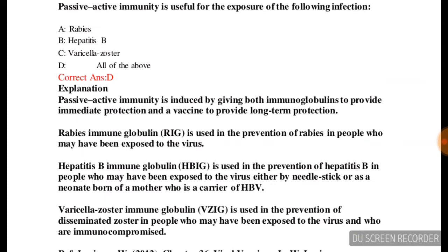Next question: passive immunity is useful for post-exposure prophylaxis of which of the following infections? Options are: rabies, hepatitis B, varicella zoster, or all of the above. The correct answer is option D — all of the above. All options are correct.